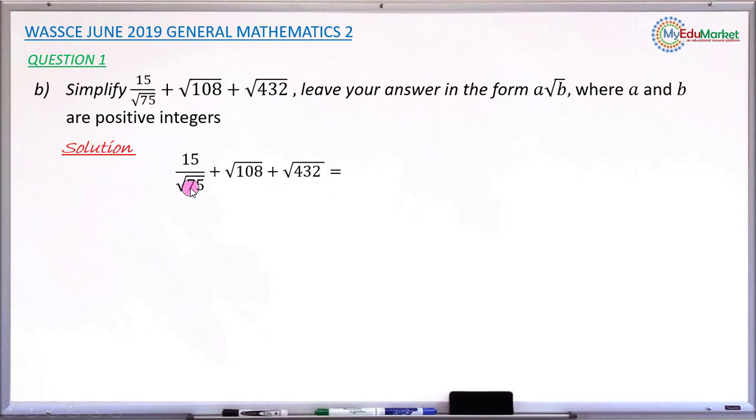So let's attempt to do that. Root 75 would now be equal to, instead of 75 we'd now split it as 25 multiplied by 3. 25 is a perfect square number. Similarly, 108 is nothing but 36 multiplied by 3. 36 you can see is a perfect square number. Similarly, 432 equals 144 multiplied by 3. You can see 144 is a perfect square number, which means that this can be simplified further.